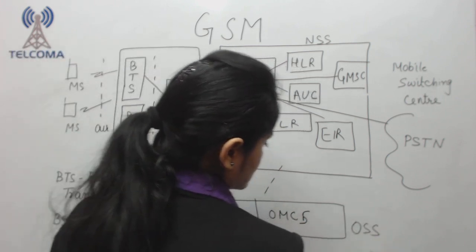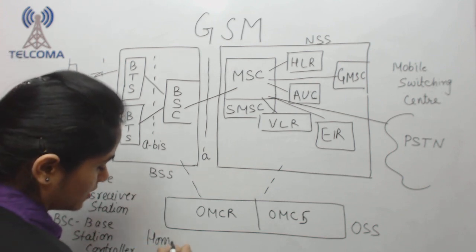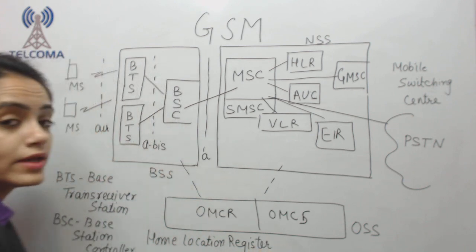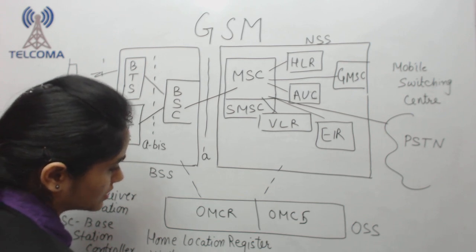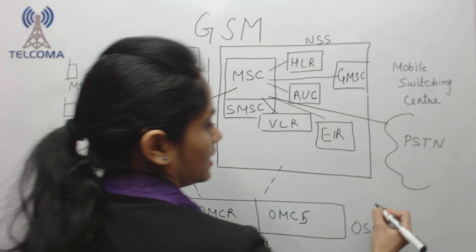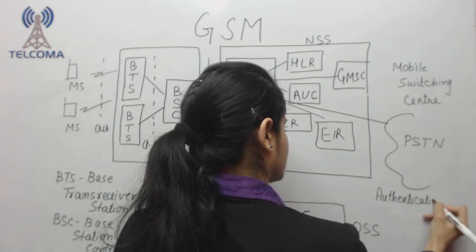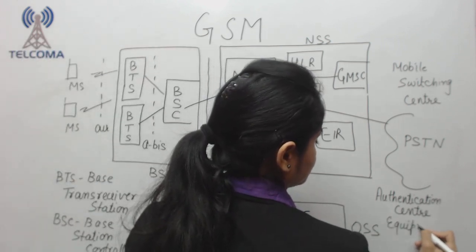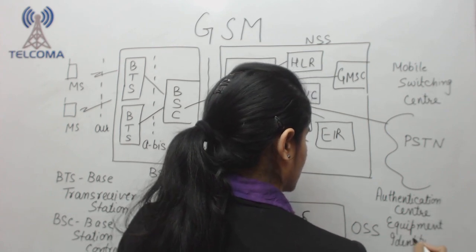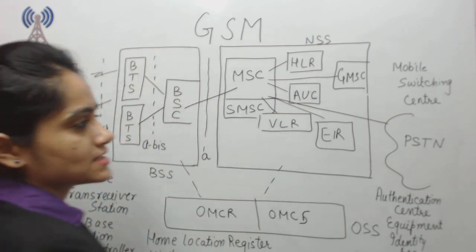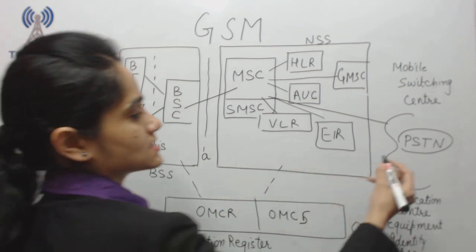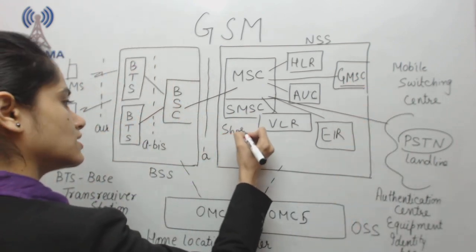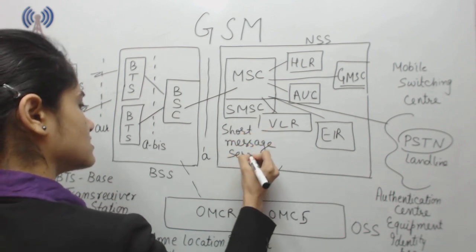HLR stands for Home Location Register. VLR stands for Visitor Location Register. AUC stands for Authentication Center. EIR stands for Equipment Identity Register. PSTN stands for Public Switched Telephone Network, which is our landline network. GMSC stands for Gateway MSC. SMSC stands for Short Message Service Center. This is how the GSM architecture looks.